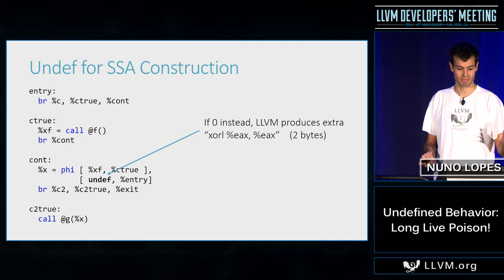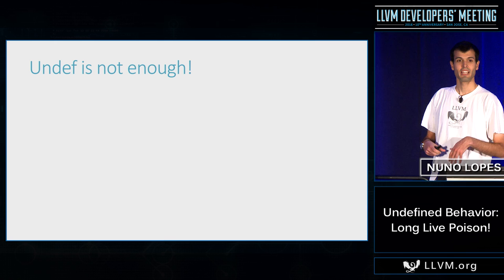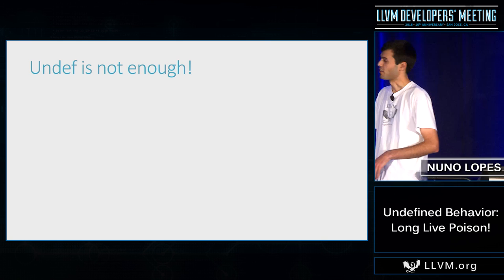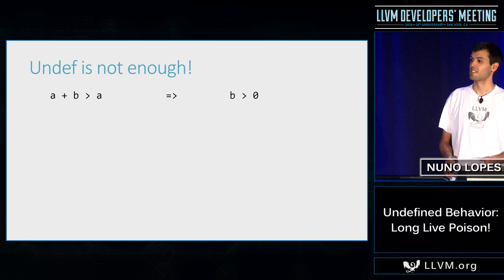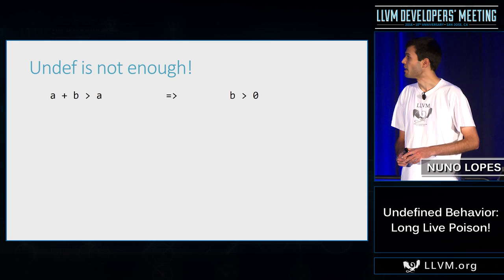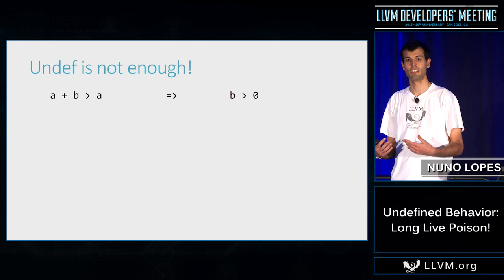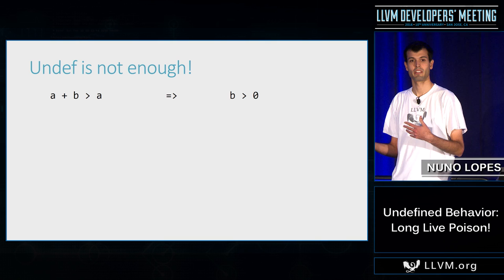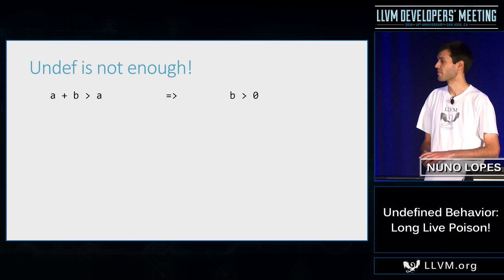Undef has been in LLVM since anyone can remember. At some point, people realized that undef was not actually enough to do everything we want. For example, if A and B are int in C and we want to perform an algebraic transformation — subtracting A from both sides — we know that if we have overflow this is not correct. But since signed integer overflow is undefined behavior in C, we should be able to perform this transformation.